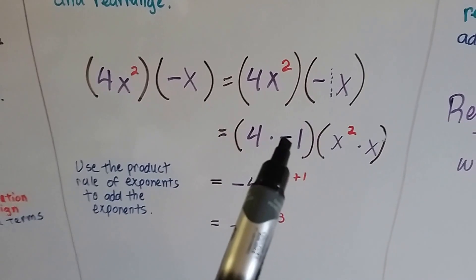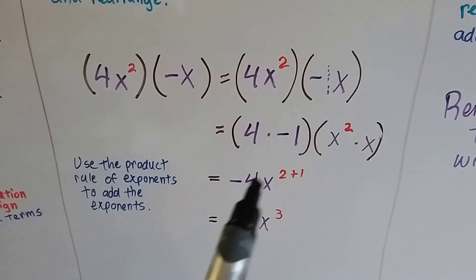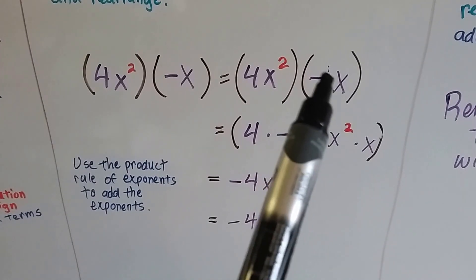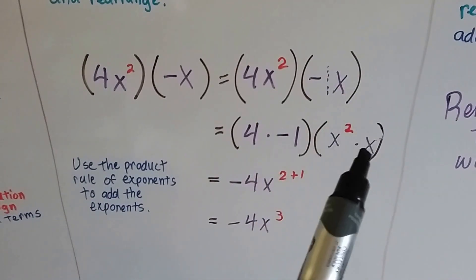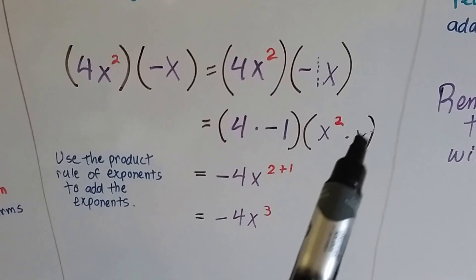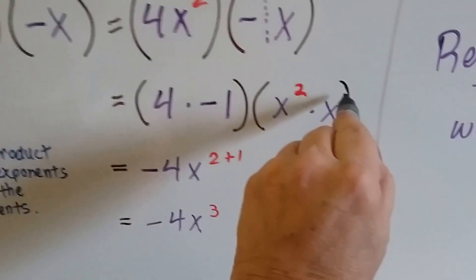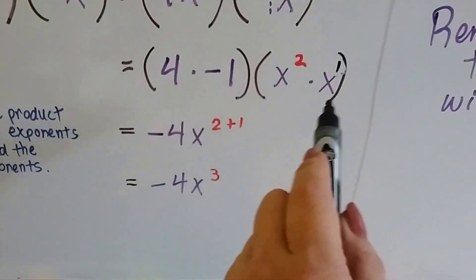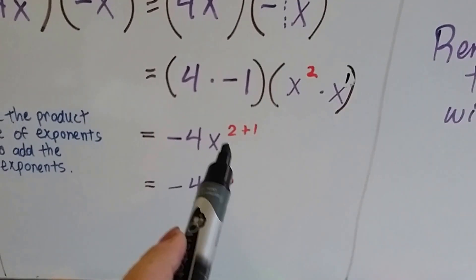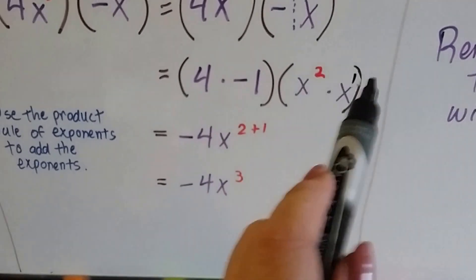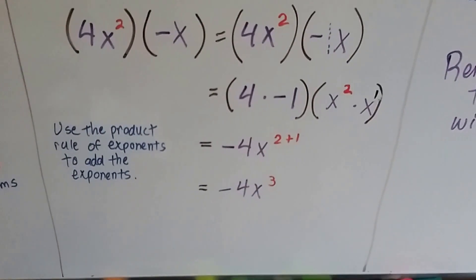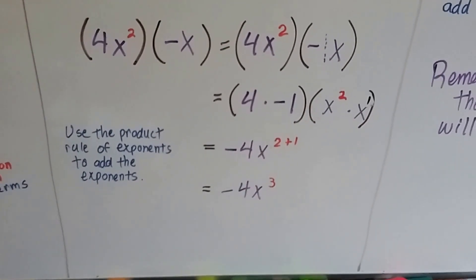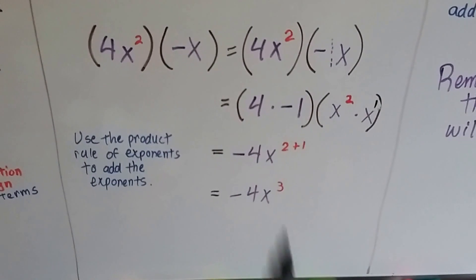Together, the 4 times negative 1 is going to give us a negative 4. And now that this negative 1 is gone, we've got x times x, x squared times x. And there's like a little 1 up here on top of this x. That's x to the first power. So that means we have x to the 2 plus 1. So, simplified, we get negative 4x to the third power. We use the product rule of exponents to add the exponents together.